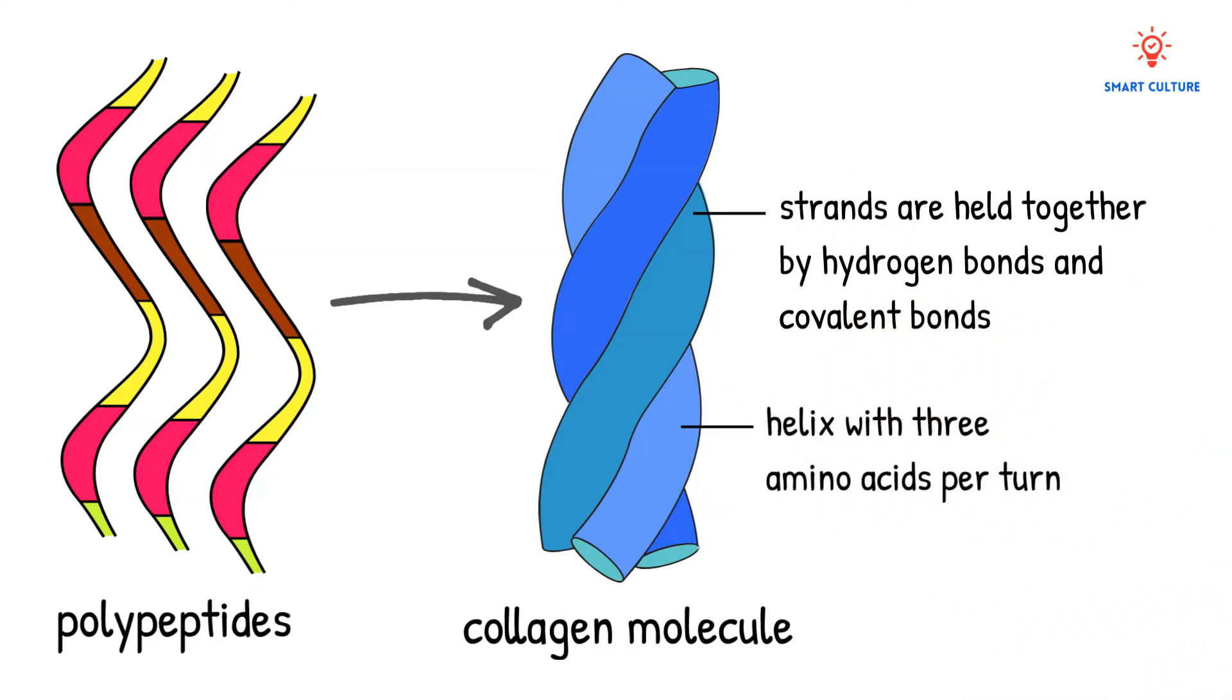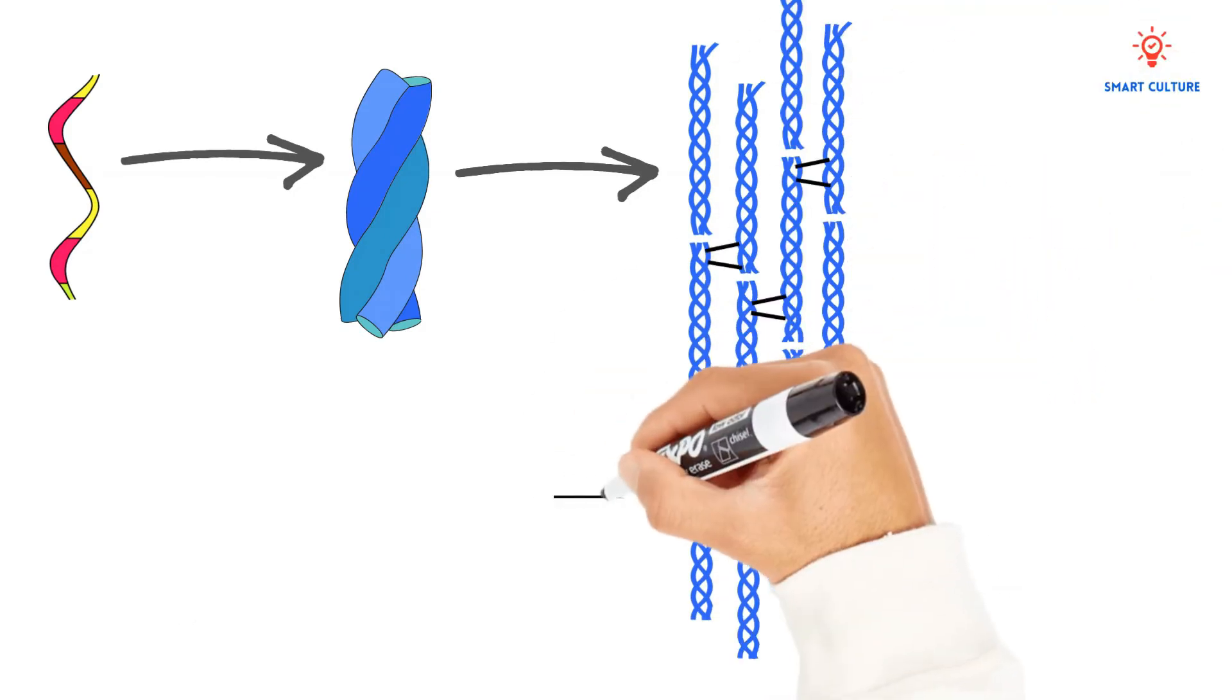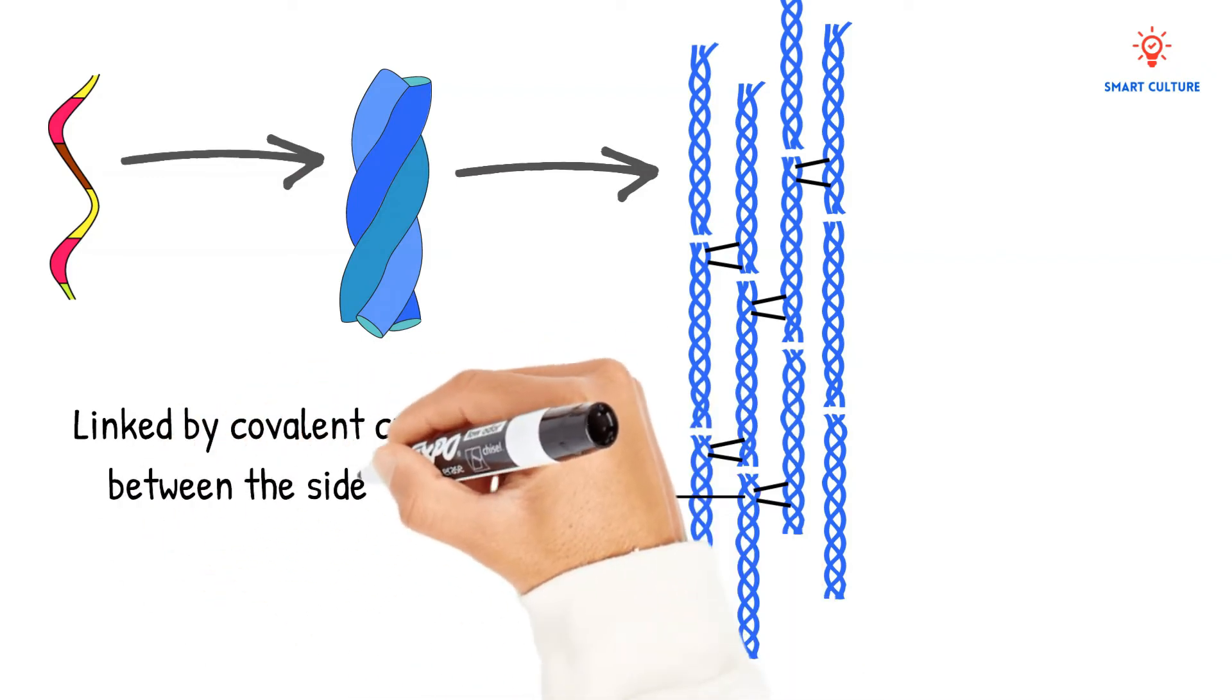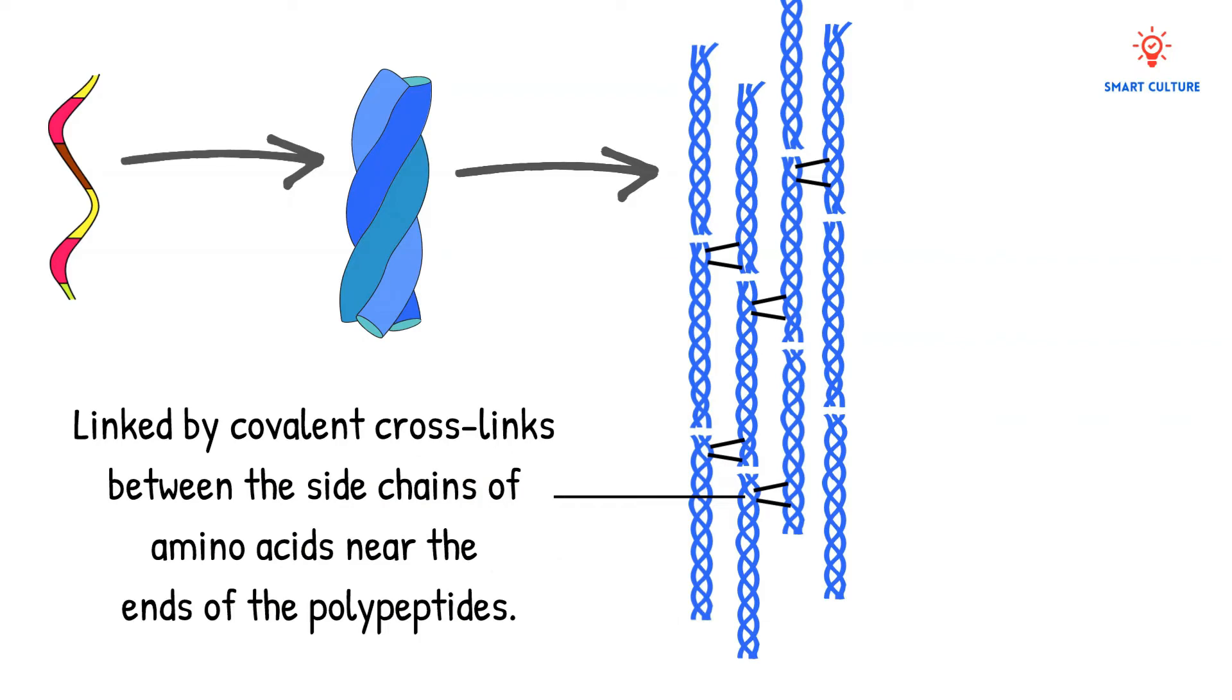These triple helices lie next to each other side by side, and they are linked to each other by covalent cross links between the side chains of amino acids near the ends of the polypeptides.